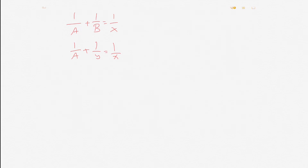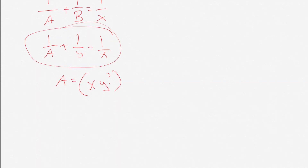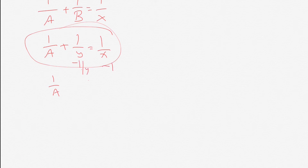The question says how many hours does it take A working alone to produce one tire, in terms of X and Y. So the ultimate answer we want is A equals something in terms of X and Y. Going back to the equation one over A plus one over Y equals one over X, we subtract one over Y from each side. That way we have one over A equals one over X minus one over Y.